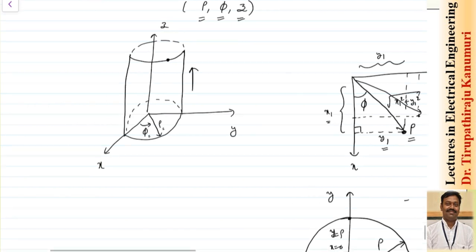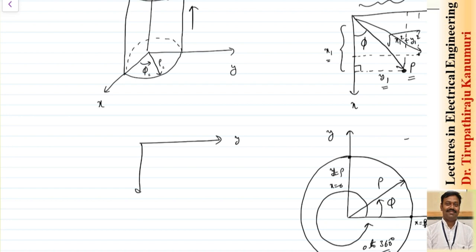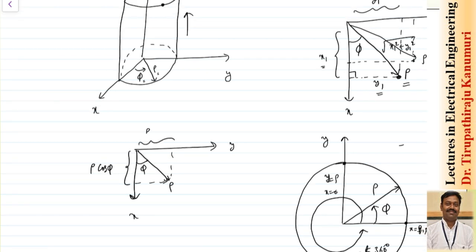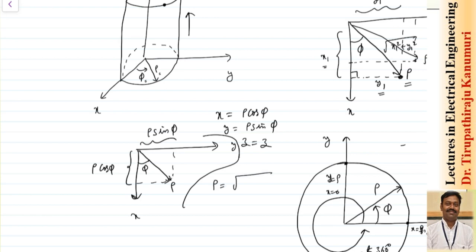Let us see the relationships between the two systems. Drawing the y-axis and x-axis, at a point with radius rho at angle phi, the projection of rho in the x-direction is rho·cosφ, and in the y-direction is rho·sinφ. So: x = rho·cosφ, y = rho·sinφ, z = z. Conversely, from rectangular to cylindrical: rho = √(x² + y²), phi = tan⁻¹(y/x), z = z.